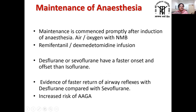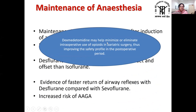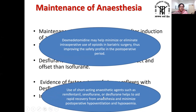For maintenance of anesthesia, commence promptly after induction using air and oxygen, and use neuromuscular blockers. Short-acting opioids like remifentanil or dexmedetomidine infusion can be used. Desflurane and sevoflurane have faster onset and offset than isoflurane and are preferred; return of airway reflexes is faster with desflurane. Dexmedetomidine may help minimize or eliminate intraoperative opioid use in bariatric surgery, improving the post-operative safety profile. Use of short-acting agents — remifentanil, sevoflurane, and desflurane — aids rapid recovery and minimizes post-operative hypoventilation and hypoxemia.